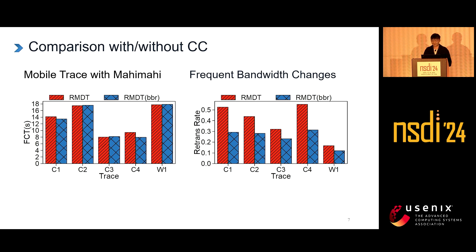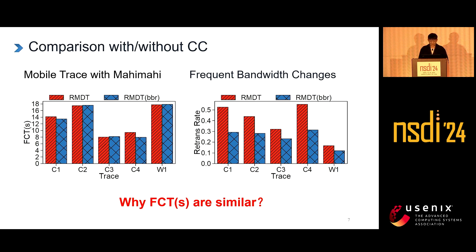We also validated this in different mobile network traces, where bandwidth change is very frequent. It can be seen that after using BBR in RMDT, the packet retransmission rate significantly decreased. However, it is surprising that the use of congestion control does not seem to have a significant impact on file completion time. In some traces, using BBR may even lead to longer completion time.